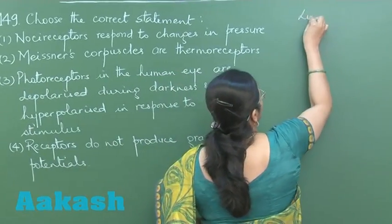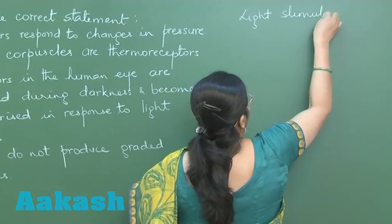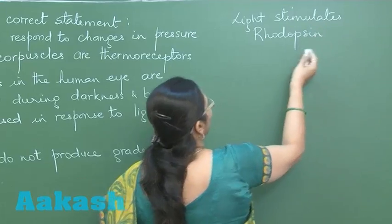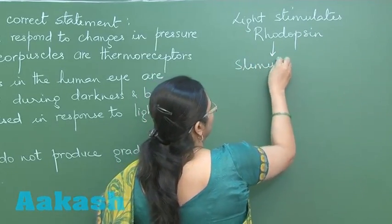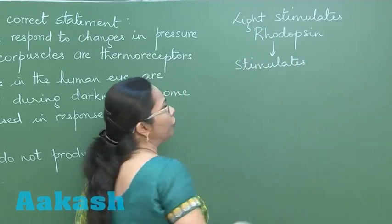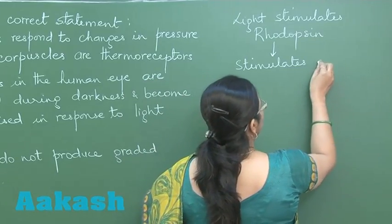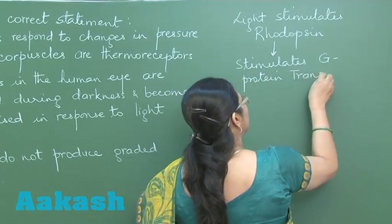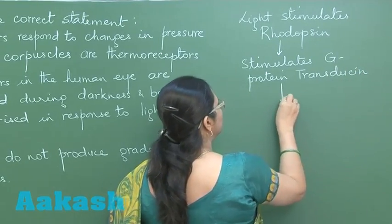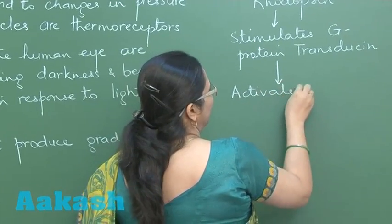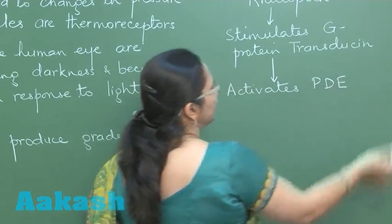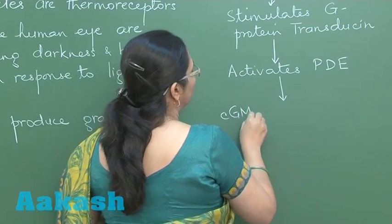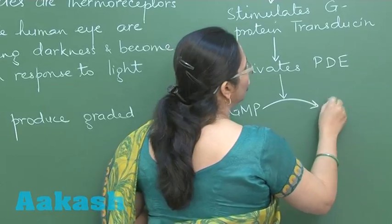When light falls on rhodopsin, it stimulates rhodopsin, which in turn stimulates a G protein called transducin present within the rods. This transducin then activates an enzyme PDE — phosphodiesterase — and once activated, this enzyme converts cyclic GMP into non-cyclic GMP.